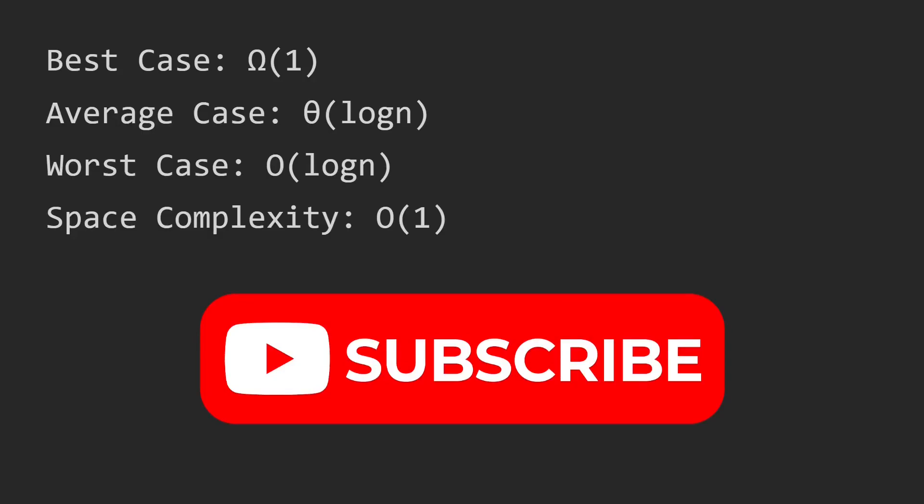Binary search does not create more space so it is O(1). That's it for binary search. In the next video we'll talk about ternary search, which is very similar but slightly different. If you found this video helpful, don't forget to subscribe and share. It means a lot.